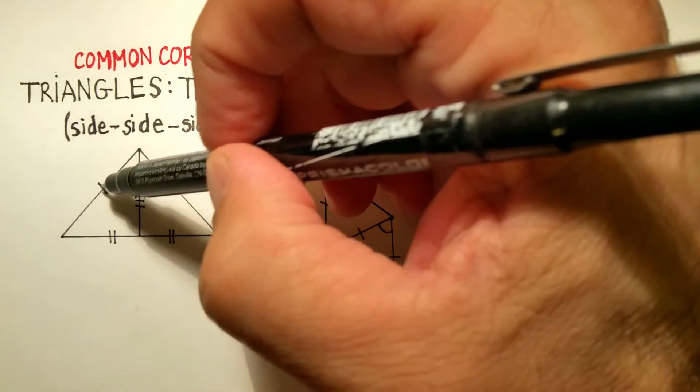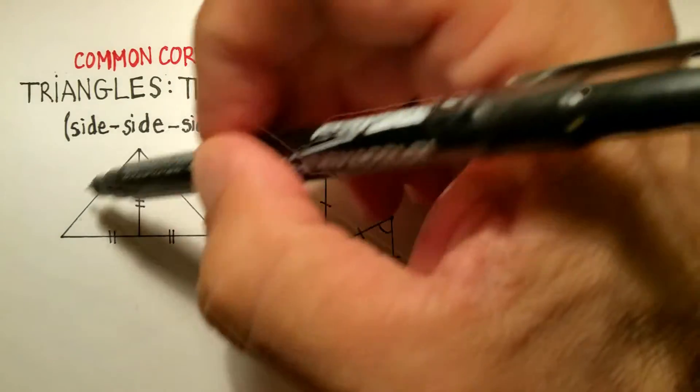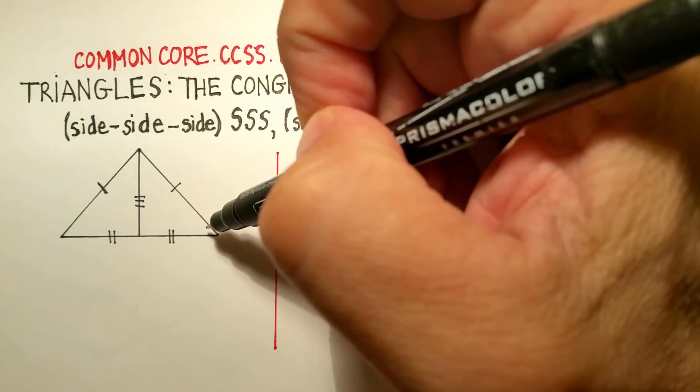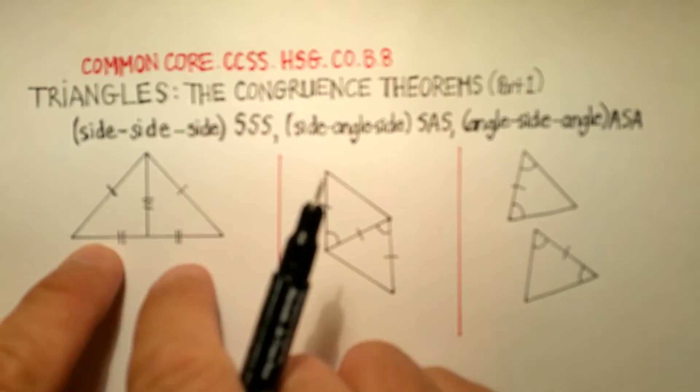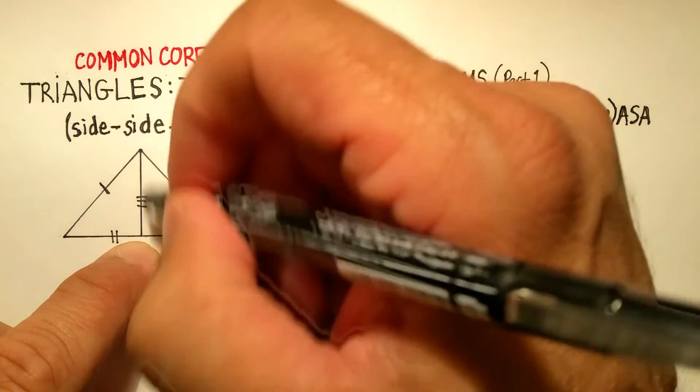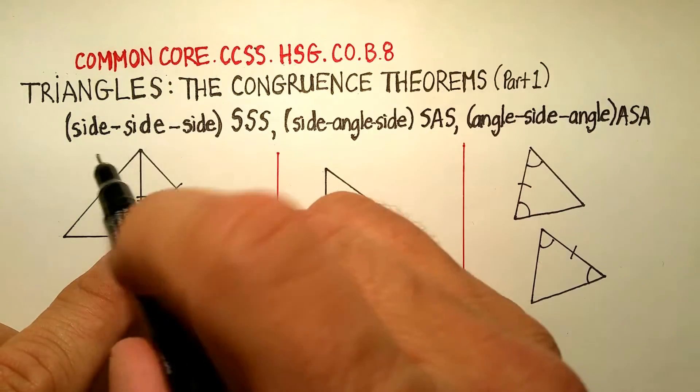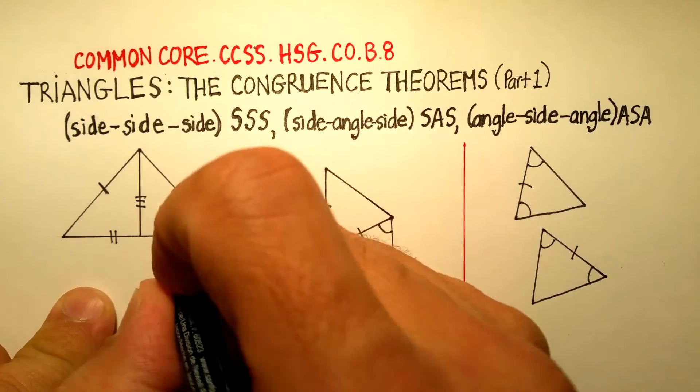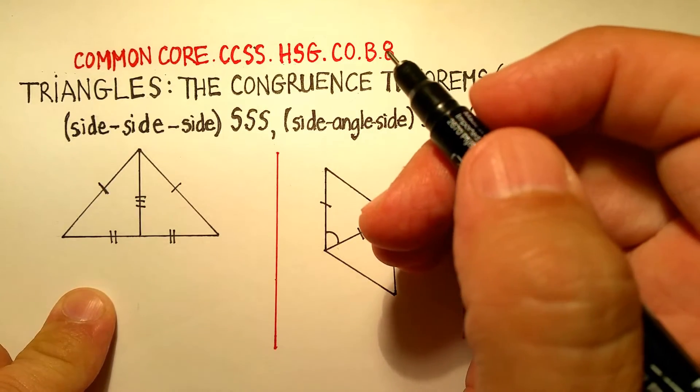Let's say we know that this side is congruent with this side. So this side of this triangle is the same as this side of this triangle over here. We also know that there's a second set of sides that are also congruent. And then there's a third set of sides that are congruent. So side, side, side. If that's true, that means that these two triangles are congruent.